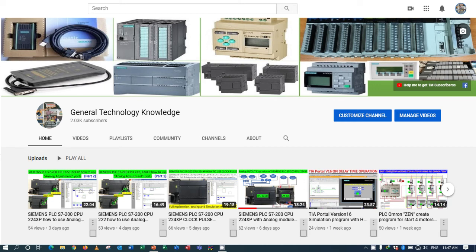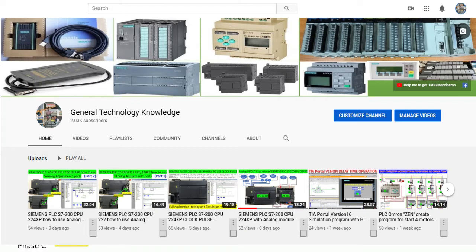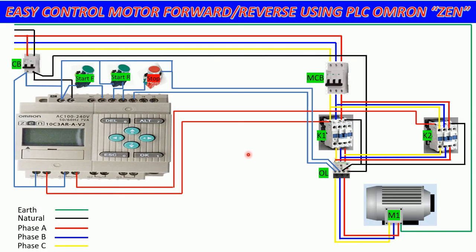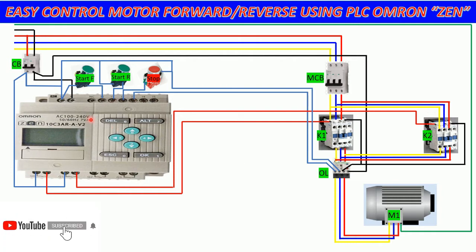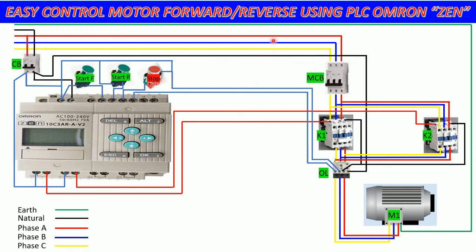Hello everyone, welcome back to my channel, General Technology Knowledge. Today I would like to show and share how to create a new program to control the motor forward and reverse using two contactors — two magnetic contactors: K1 for start forward and K2 for start reverse. Here is the PLC Omron model ZEN. Before creating the new program for test simulation, I would like to explain a little bit about the control diagram and power diagram.